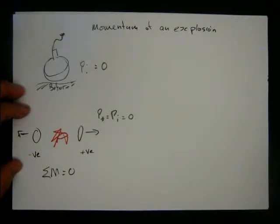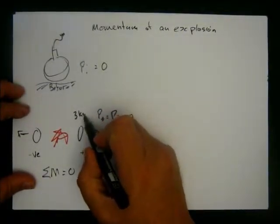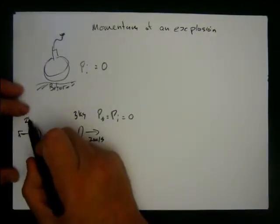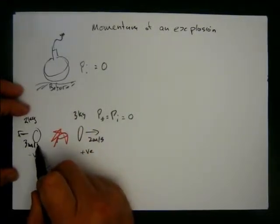Let's do an example. Say we end up with a 3 kg piece doing 2 meters per second this way. Don't want anybody harmed by this explosion. And we've got a 2 kg piece going 3 meters per second that way.